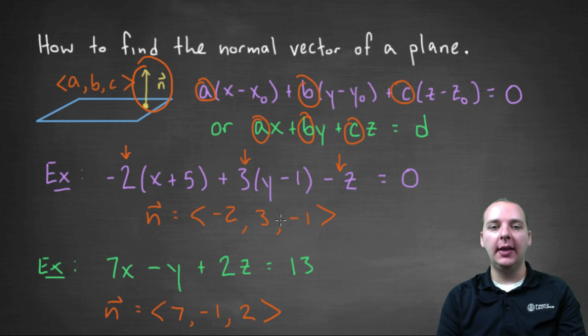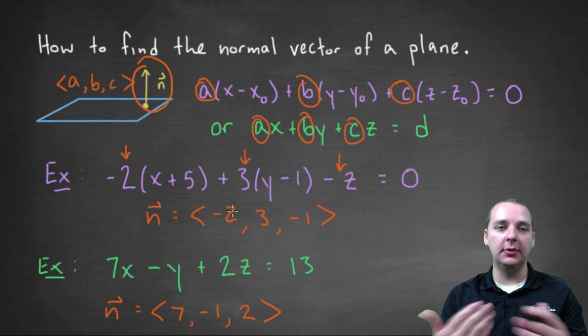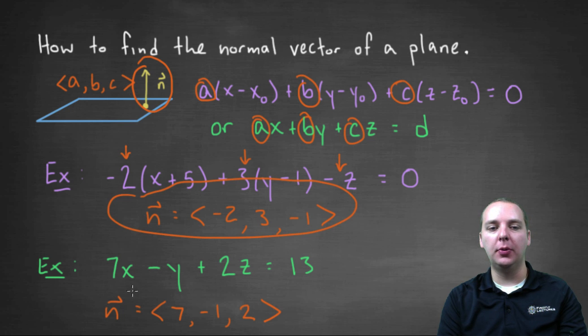for example, that will also be a normal vector to the plane. You can have any scalar multiple. It can be shorter, longer, negative, which will change its direction in reverse. However you want to say it, all normal vectors to your plane will have to be a scalar multiple of these normal vectors here that you found.